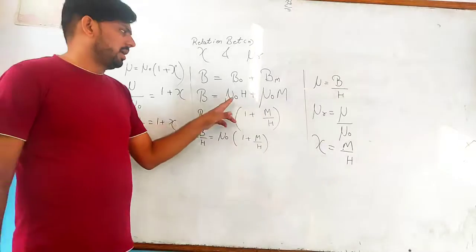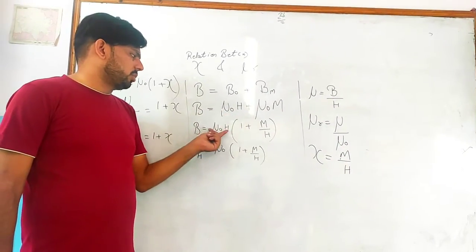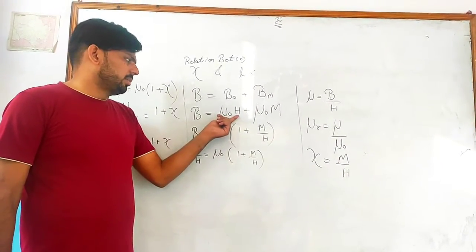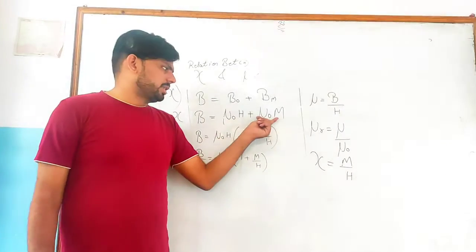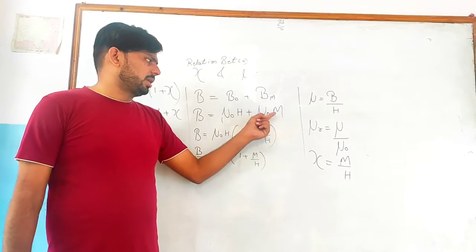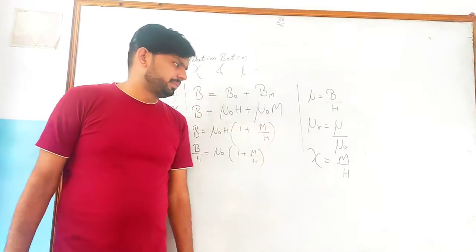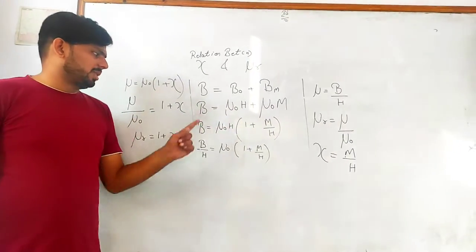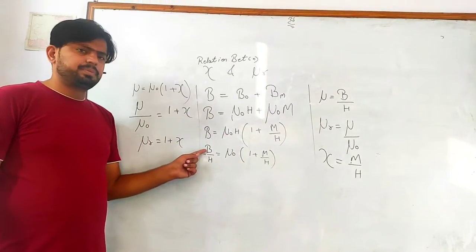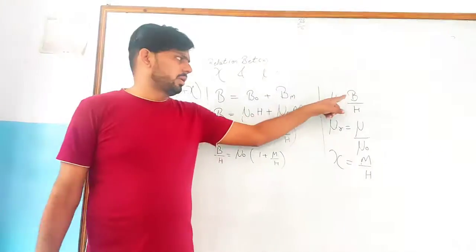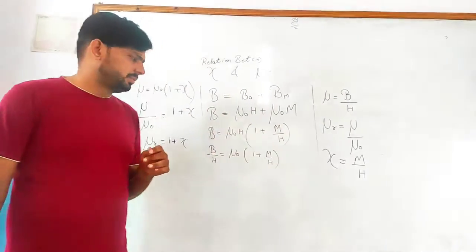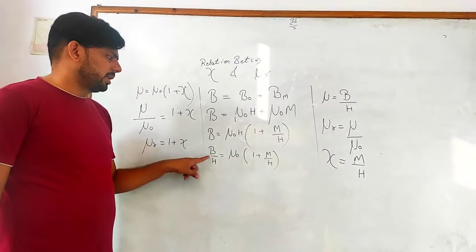Now first, we will take mu not H as common from here. When we take mu not H common, we get mu not H in bracket 1 plus M upon H. B upon H, B upon H - what is this? Magnetic permeability. B upon H is mu.